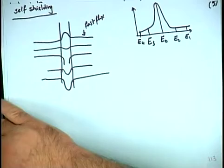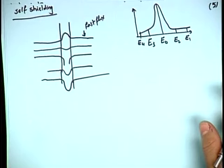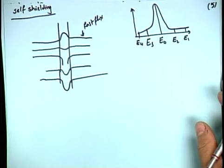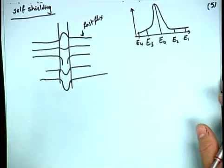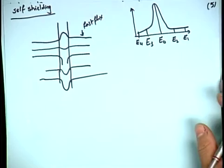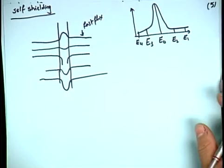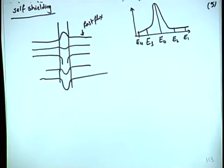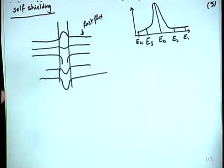After this, we started self-shielding. There are two phenomena: spatial self-shielding, where the outermost fuel layers absorb neutrons and reduce the neutron flux reaching the center of the fuel; and energy self-shielding, where a very high resonance absorption cross-section causes a dip in the neutron flux at that resonance energy, reducing the effective absorption.